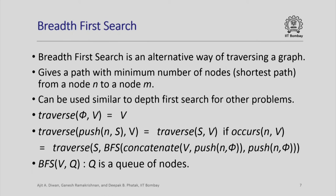There is an alternative way of traversing a graph, just as in trees we have pre-order and post-order. This is called breadth-first search, and it is especially useful when we want to find a path with the minimum number of nodes from a given node to another. Depth-first search gives you one possible path from n to m, but it may be a very long path — like a very roundabout flight route — whereas breadth-first search gives the shortest possible path. BFS is defined in a similar way, with a list of nodes to be visited and a list of visited nodes.